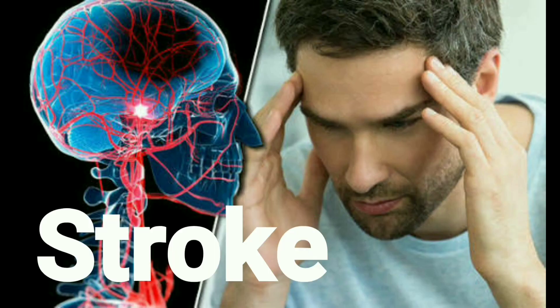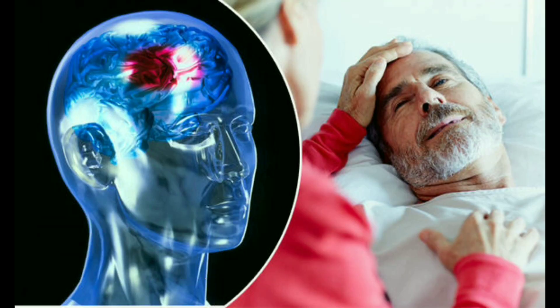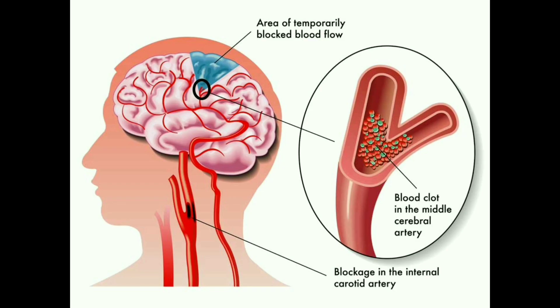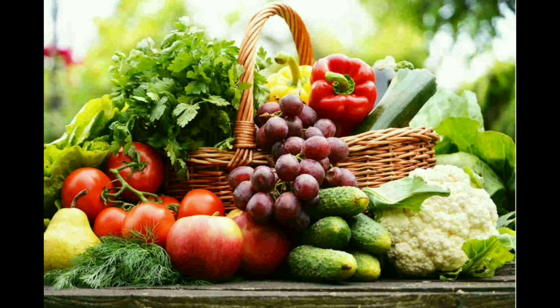Number 2: Stroke. Stroke is mainly caused by the rupturing or blockage of blood vessels present in the brain. A stroke causes approximately 7 million deaths to date. It is one of the most dangerous and well-known diseases. It is caused by the deposition of chemical compounds in the blood vessels, and can be avoided by eating a healthy, balanced, and nutritious diet.